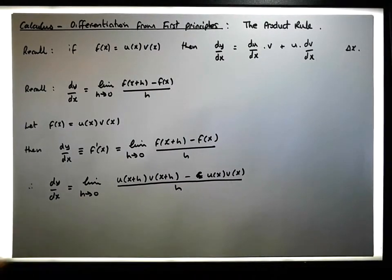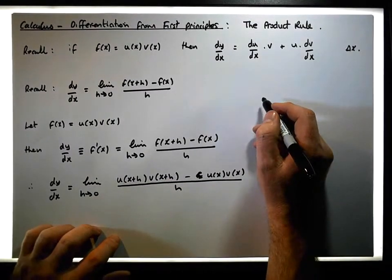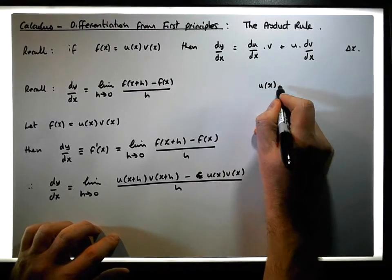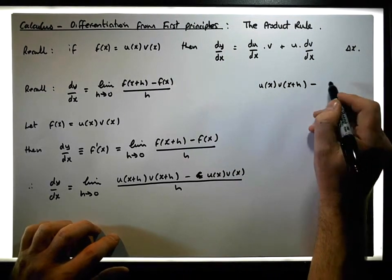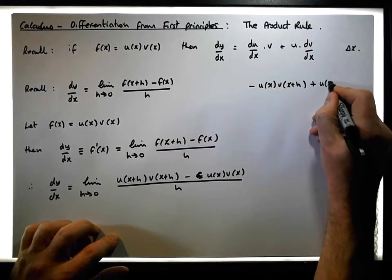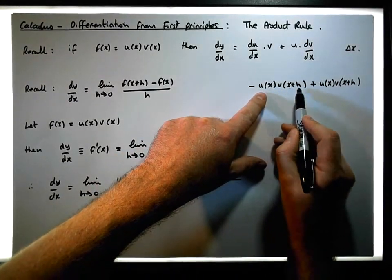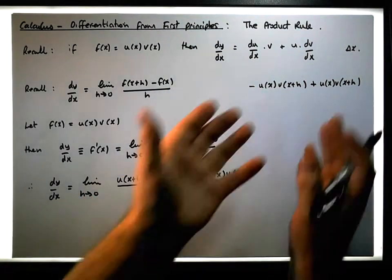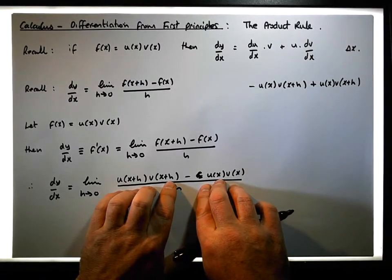We're going to do a bit of sleight of hand. We're going to introduce a factor between both of these terms — specifically, we introduce u(x)·v(x+h) minus u(x)·v(x+h). You can see that minus u(x)·v(x+h) plus u(x)·v(x+h) equals zero, so introducing this term has no effect, but it's going to help us expand and factor the expression.